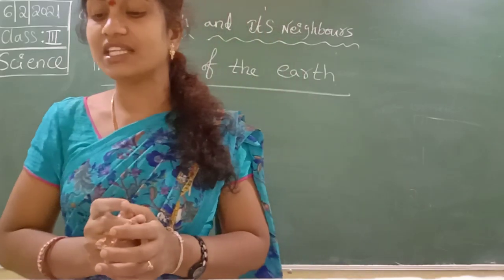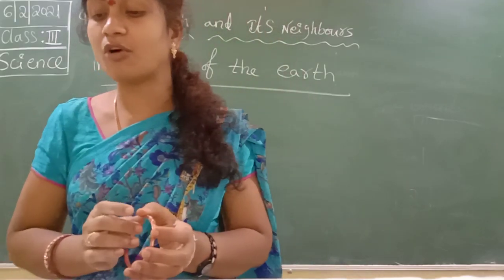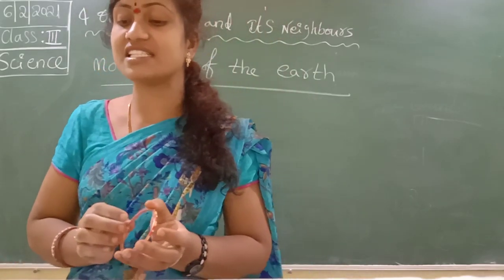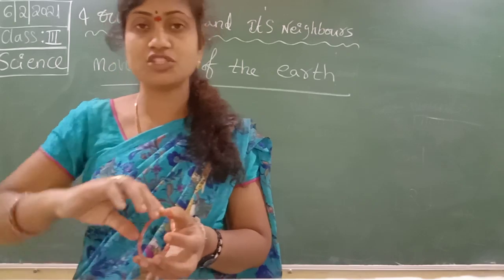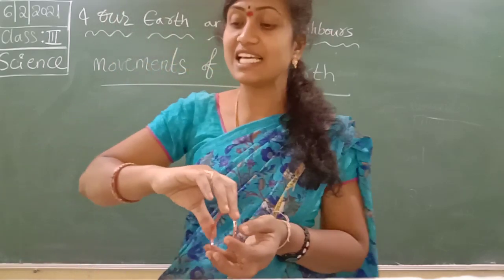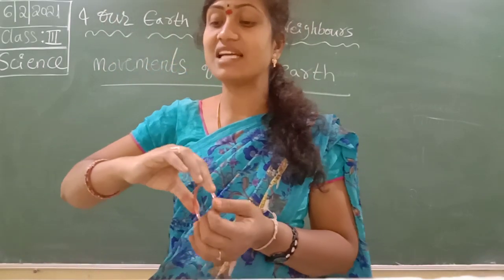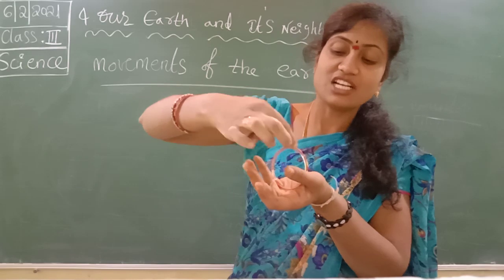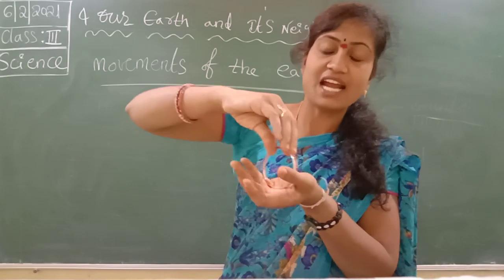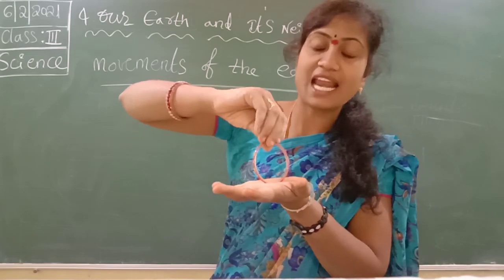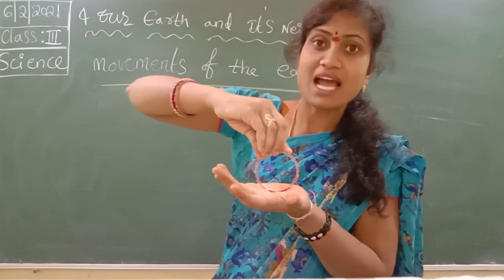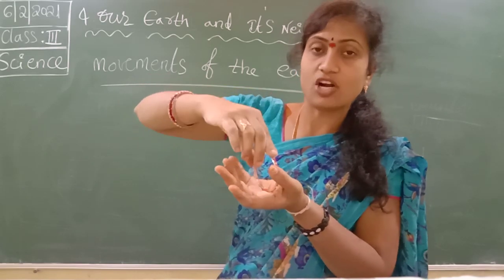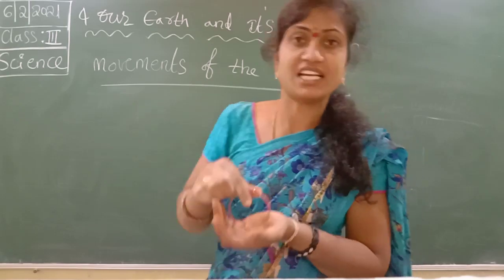It looks like a ball. All the rings spinning together look like a ball. In the center of the ball, it seems as if there is a line passing through. This imaginary line is called the axis.